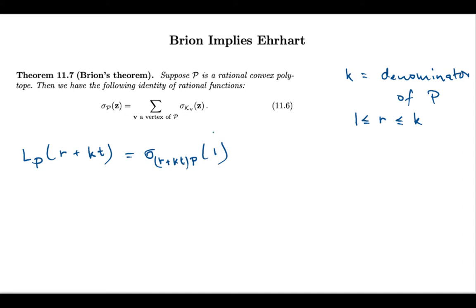Yeah, so this really is the vector 1, 1, 1, 1. And now, Brion says that I can write this integer point transform as the sum of the rational functions expressing the integer point transforms of the vertex cones. And, of course, dilating the polytope means I dilate each of my vertex cones. So, here I see the integer point transforms of the respective dilates.